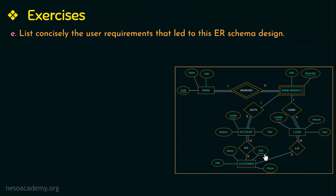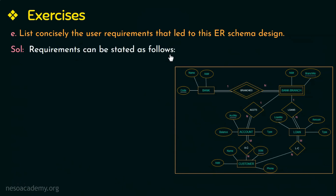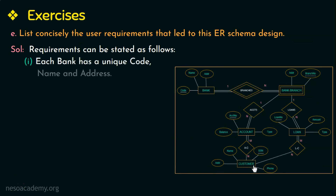The fifth question is: list concisely the user requirements that led to this ER schema design. Generally requirements are given and we draw the ER diagram, but here an ER diagram is given and we define the requirements from it. In this ER diagram we have identified five entity types: bank, bank branch, account, loan, and customer.